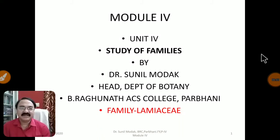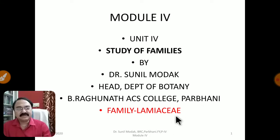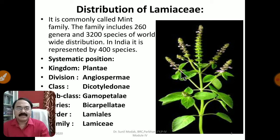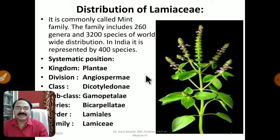Hello, Namaste dear friends. In this series of Module 4, we are studying the families belonging to angiosphalmic plants. Here we are studying another interesting family, Lamiaceae. The most common plant of this family that we observe is Ocimum, which we call Tulsi. The distribution of this family: it is commonly called the Mint family and includes about 260 genera and about 3200 species worldwide, and in India it is represented by about 400 different species.